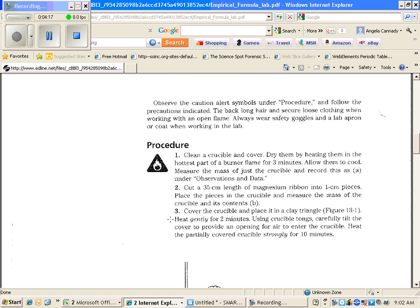It says heat gently for two minutes and then strongly for 10 minutes. In other words, the two minutes is to let it get burning. Hopefully, that's when you'll have the glow started when it's covering. Then, if you'll notice in this step, it says using crucible tongs, carefully tilt the cover to provide an opening for air to enter. That's so the oxygen can come in and start reacting. Heat the partially covered crucible strongly for 10 minutes.